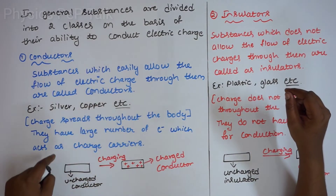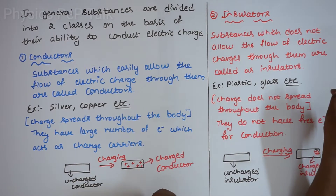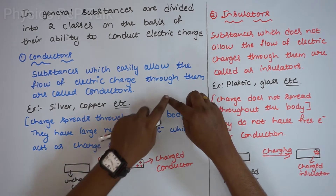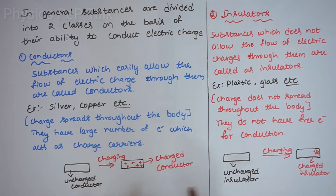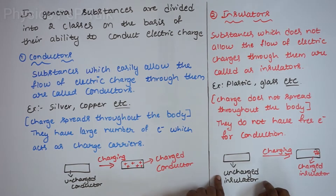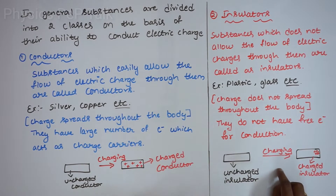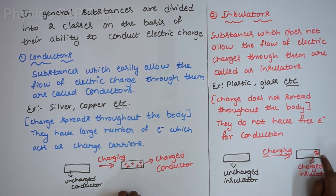Insulators lack free electrons, so charge carriers don't have free electrons to move. If you put a charge on an insulator, the charged particles will stay at a particular region — it will not spread. The positive charge will be fixed in one region. Such types of bodies are called as insulators.